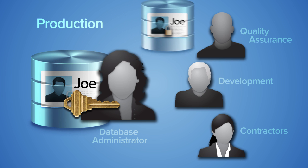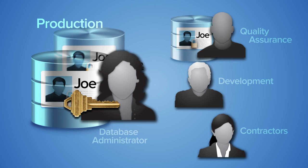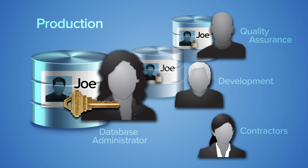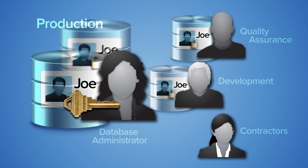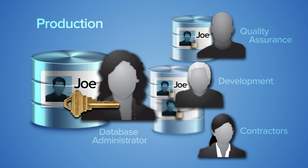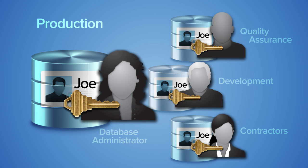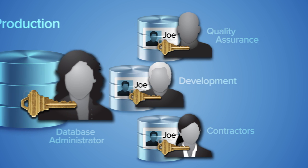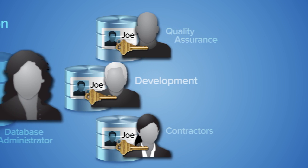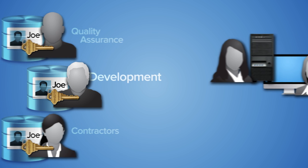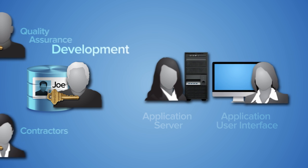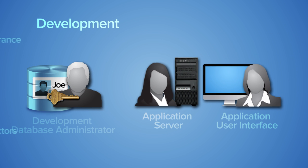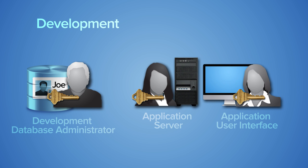So, you duplicate production data to create a working environment for each of your teams. Yet, this exposes it more broadly within the organization and introduces risks. There are more copies of the data, more access points to it, and many more people accessing it. Within each new environment, the technology stack also has risks, even if the data is encrypted.